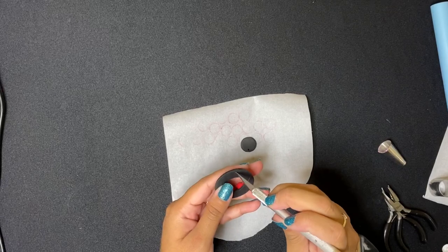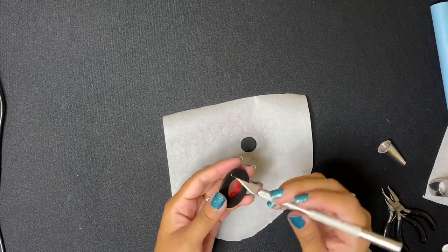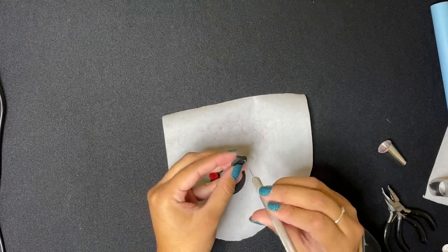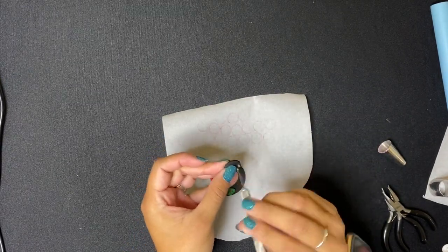The hole might shrink a little bit while it is drying, so if it does, you can go back over with an exacto knife or with your toothpick to try to pry it open just a little bit more.